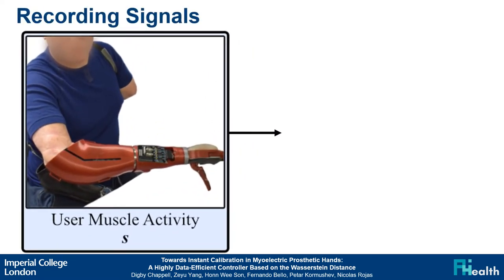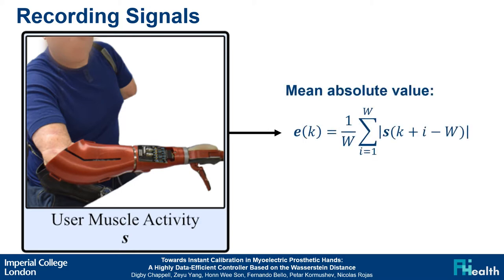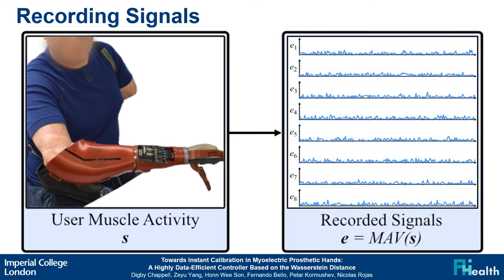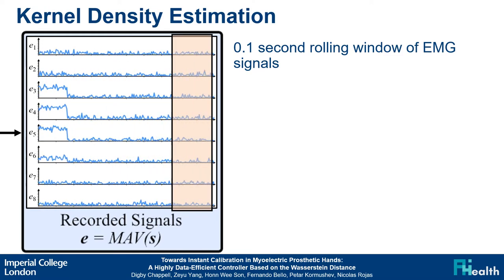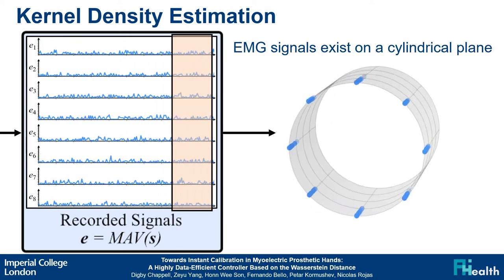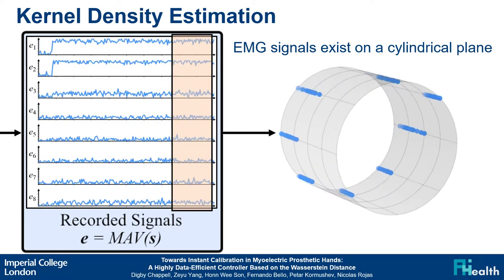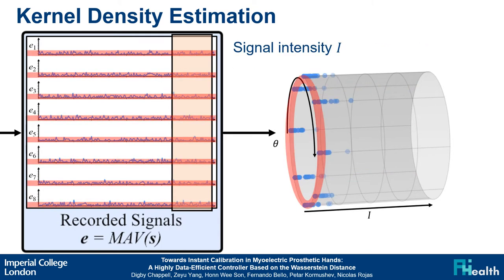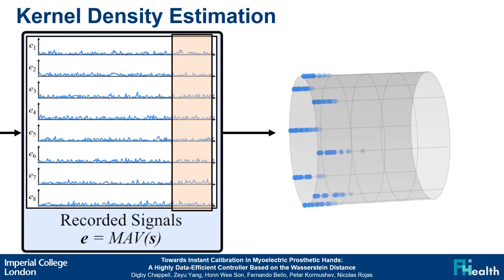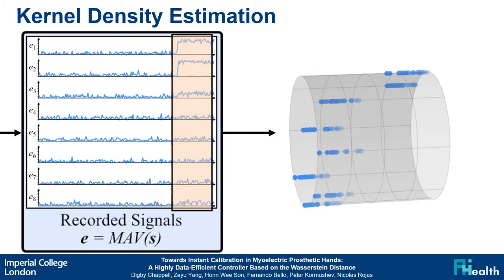Muscle activity signals are recorded from an electrode armband around the user's forearm. We take the mean absolute value of this signal to generate its envelope, then look at a 0.1 second rolling window of these signals. EMG signals can be thought of as existing on a cylindrical plane, where the radial dimension is the circumferential position around the forearm at which the signal was recorded, and the linear dimension is the intensity of the signal. This allows us to look at recorded signals in terms of their position as well as their intensity.